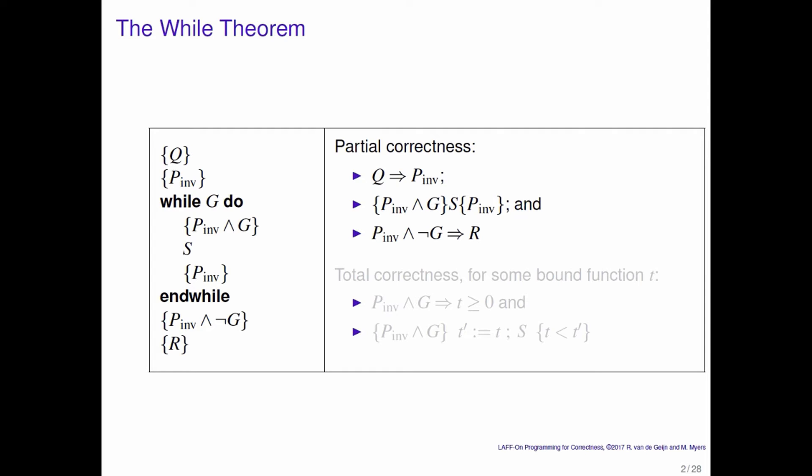Now once you have proven that, all you really have is partial correctness, because it's only if you come out of the loop that you will have computed the correct result. What you still need to prove is that the loop actually at some point will terminate. And that's the topic of the next unit.